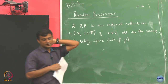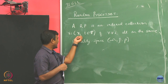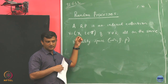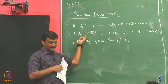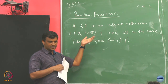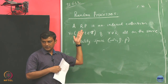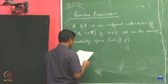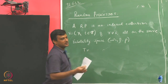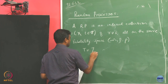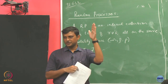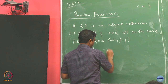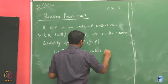Earlier when we talked about random vectors, we had a finite number of random variables, but here that need not be the case. Here the indexing set T could be uncountable, or countably infinite. If T happens to be integers — say 0, 1, 2, 3, 4, and so on — then the random process X is called a discrete random process.